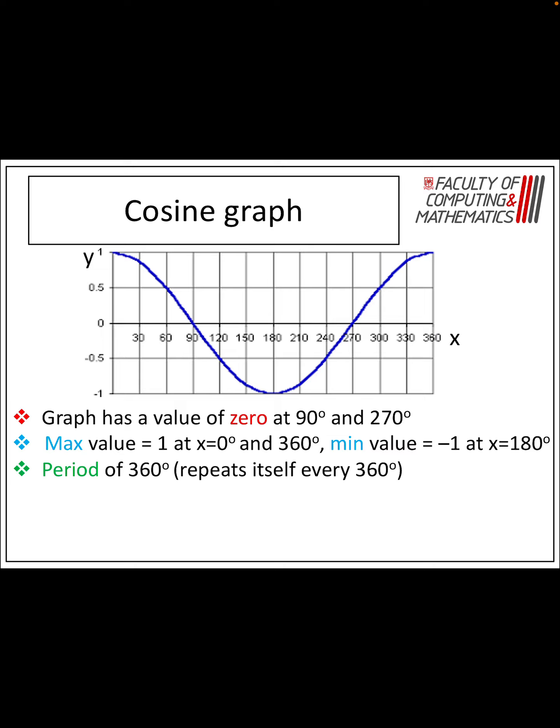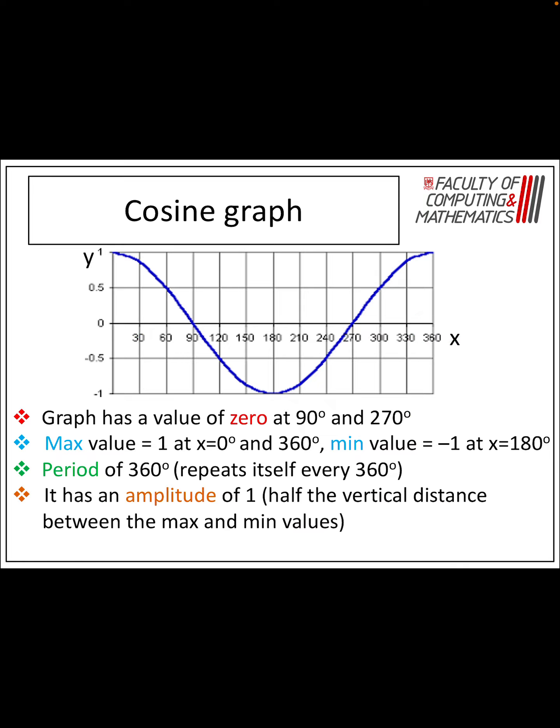The period of this graph is from 0 to 360 degrees — it repeats itself again after that. And it's got an amplitude of 1, again half the distance between the maximum and minimum values.